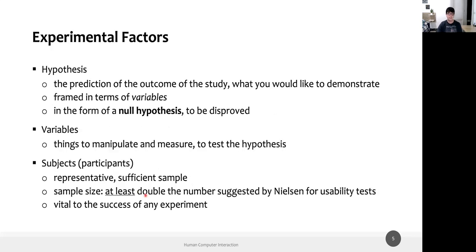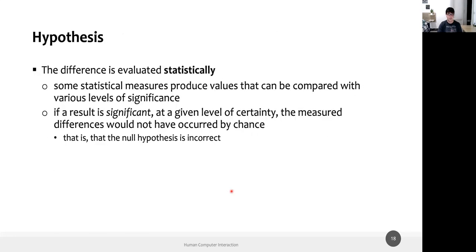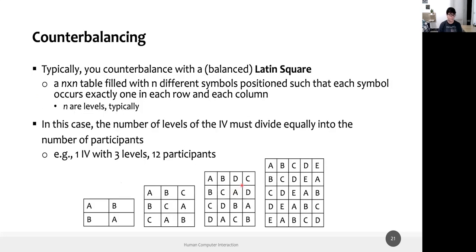We need at least that number — it's too few, but it should be a number divisible by the number of conditions. So at least 10, but typically control experiments have around 20 to 30 people in that range. For example, nine is too few — you need 12 or 16; eight is too few; you can go up to 32 or 64. A reasonable number is more than the minimum, typically 20 to 30 people for within-subject.